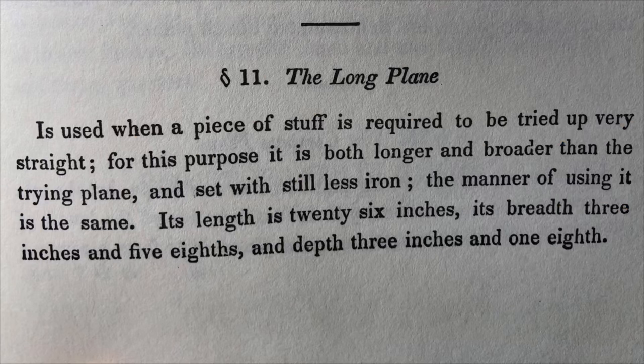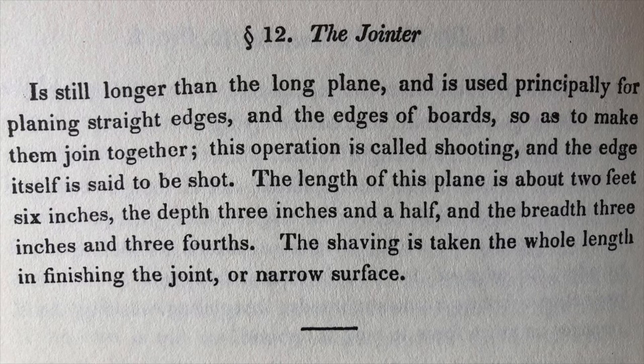So Nicholson's triplane sounds an awful lot like what Neve called the long plane. However, Nicholson also describes a plane he calls the long plane: 'The long plane is used when a piece of stuff is required to be tried up very straight. For this purpose it is both longer and broader than the trying plane and set with still less iron. The manner of using it is the same.' So per Nicholson's description, the triplane and the long plane are essentially the same plane with the primary difference being length. Nicholson's jointer plane is 'still longer than the long plane and is used principally for planing straight edges and the edges of boards so as to make them join together.'